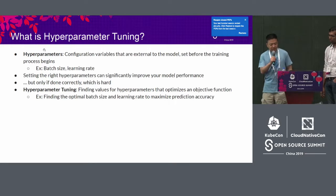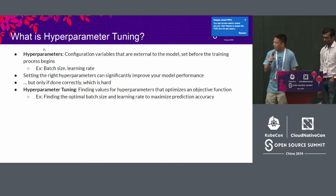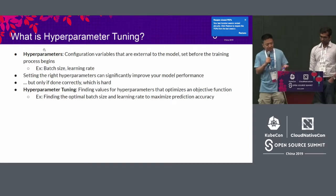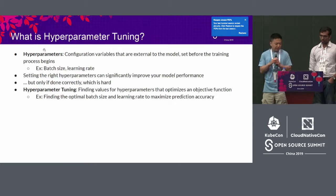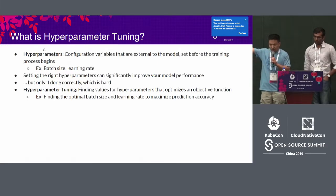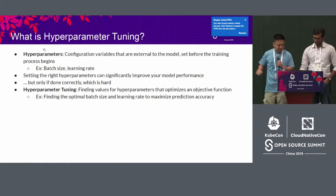Hyperparameters are configuring variables that are external to the model, set before training begins. Setting the right parameters can significantly improve your model performance — but only if done correctly, which can be very difficult. Hyperparameter tuning is the process of finding optimal values for hyperparameters such that your objective function — in this case, predicting handwritten digits — maximizes prediction accuracy.